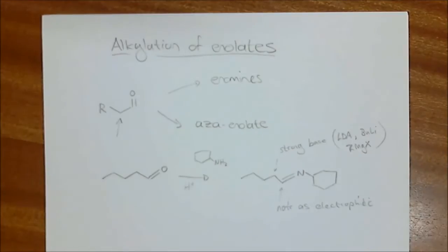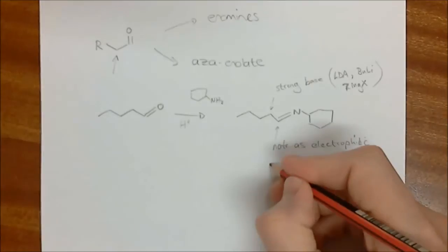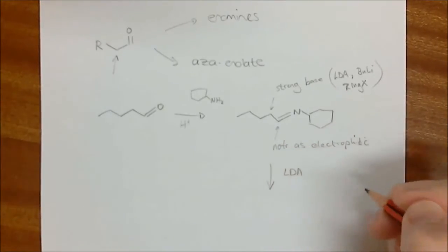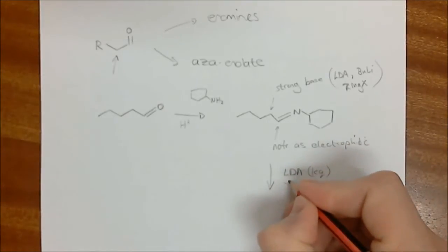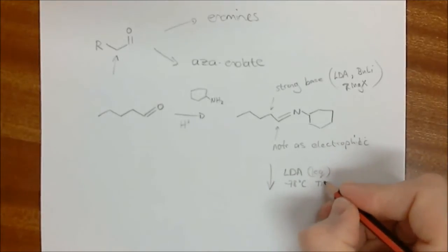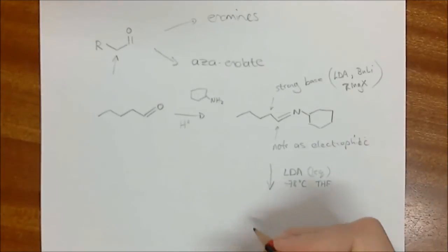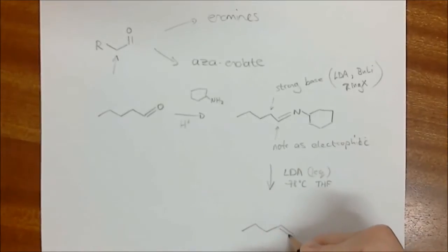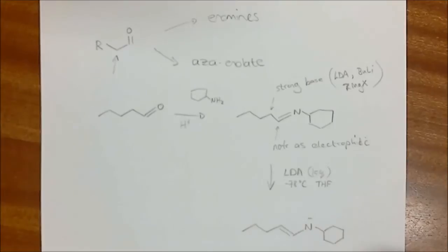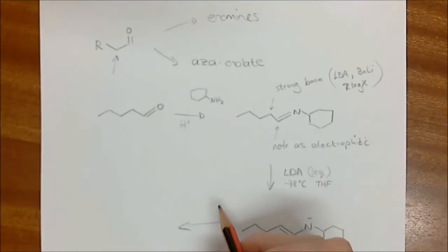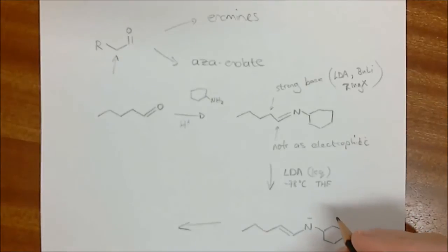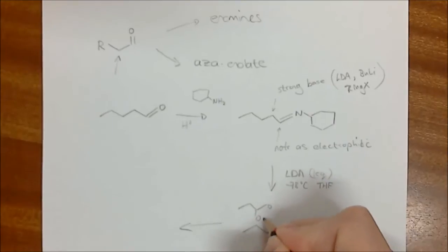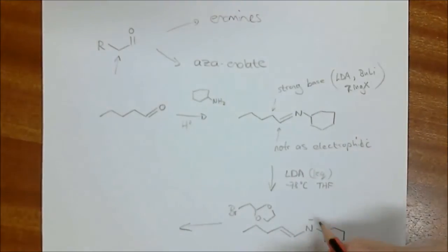We add a strong base — in this case one equivalent of LDA — at low temperature in THF as solvent. We let that stir, deprotonate, and generate the aza-enolate: the nitrogen equivalent with a negative charge there. Now we can add whatever alkylating agent we like — standard alkylating agents — provided they are primary or secondary; tertiary leaving groups will not react with enolates. In the textbook they use an example with a bromine-containing electrophile.